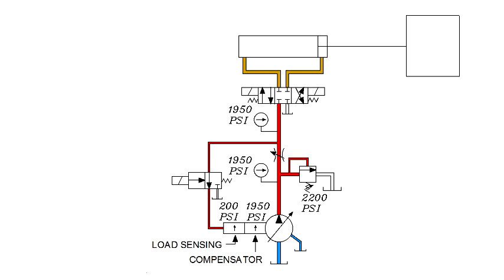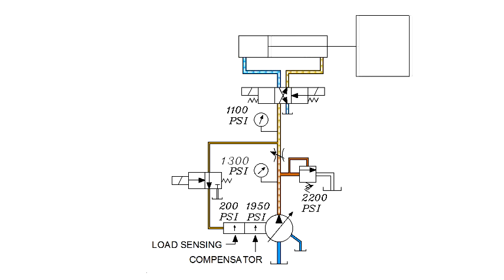When the directional valve is shifted to retract the cylinder, the smaller surface area of the piston requires more pressure to retract the load. Pressure then builds to 1100 psi, and the pump is stroked to deliver 1300 psi. Notice also that the cylinder retracts faster than it extends because it doesn't take as much fluid to retract as it does to extend due to the rod displacing volume.